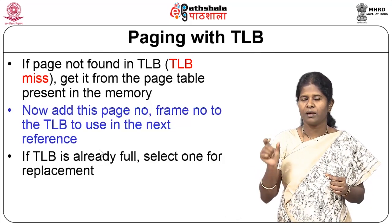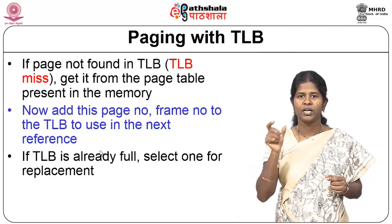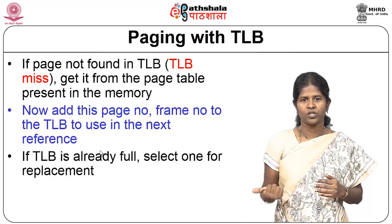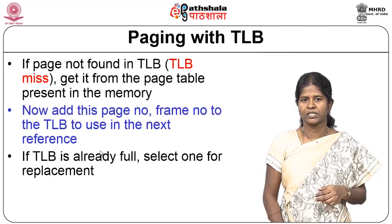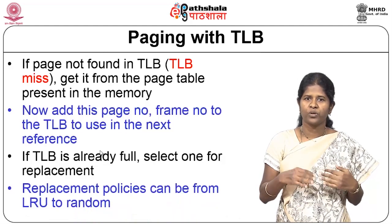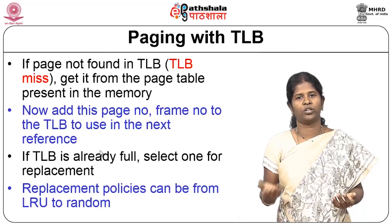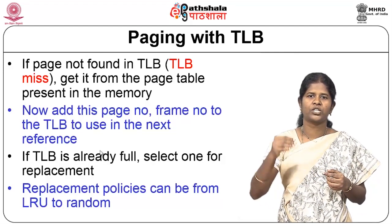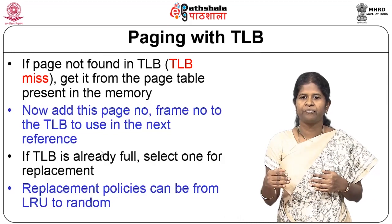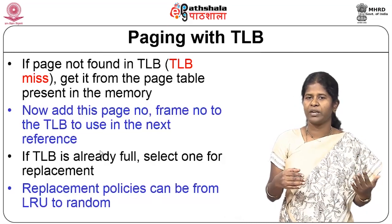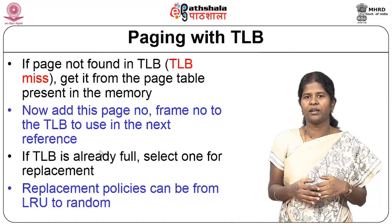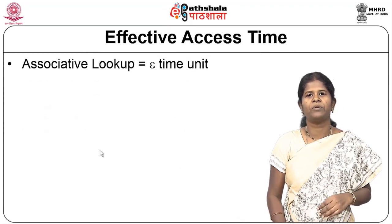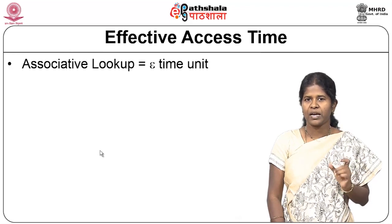When a page number and frame number combination is brought into the TLB and the TLB is already full, one entry must be selected and removed. Replacement policies such as Least Recently Used (LRU) can be used — an entry that was not used recently is selected as the victim and replaced with the new entry. Having this TLB improves effective memory access time by reducing the number of main memory accesses needed.